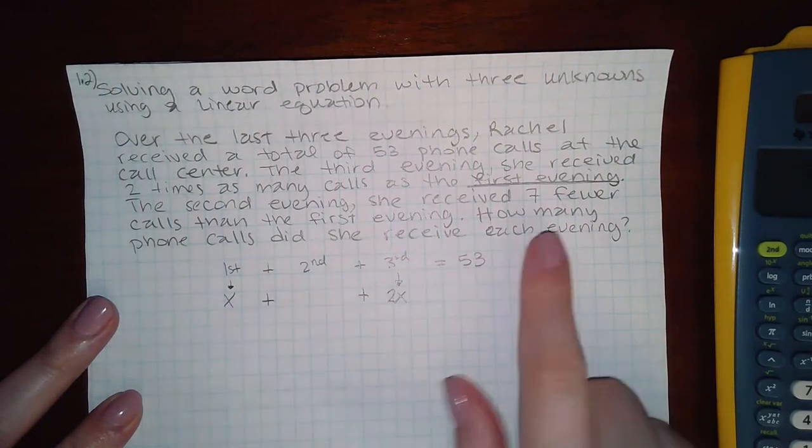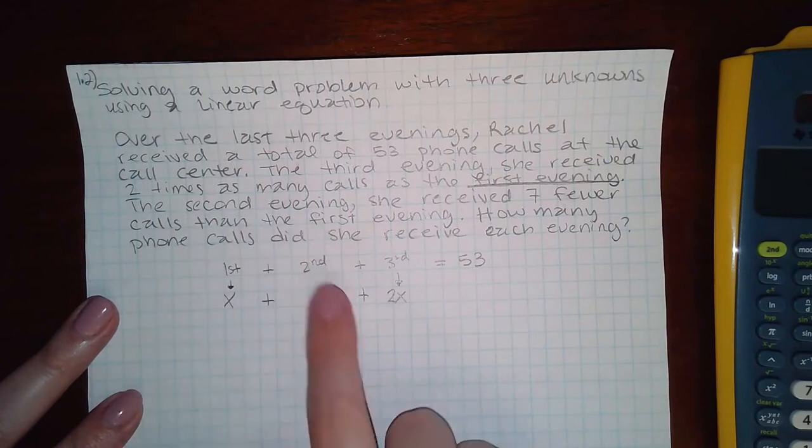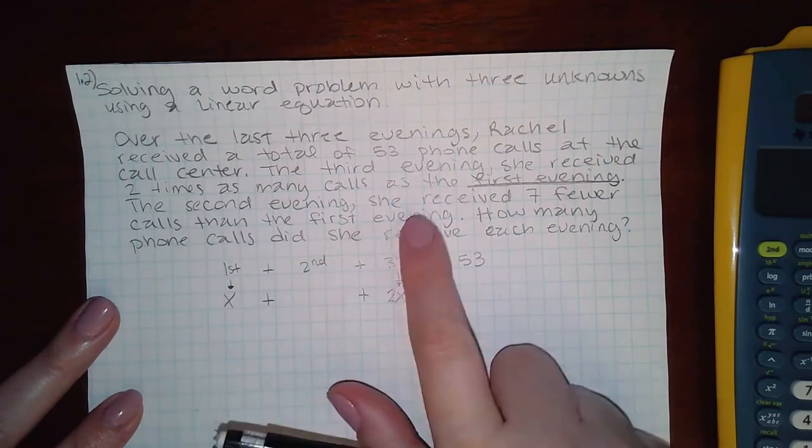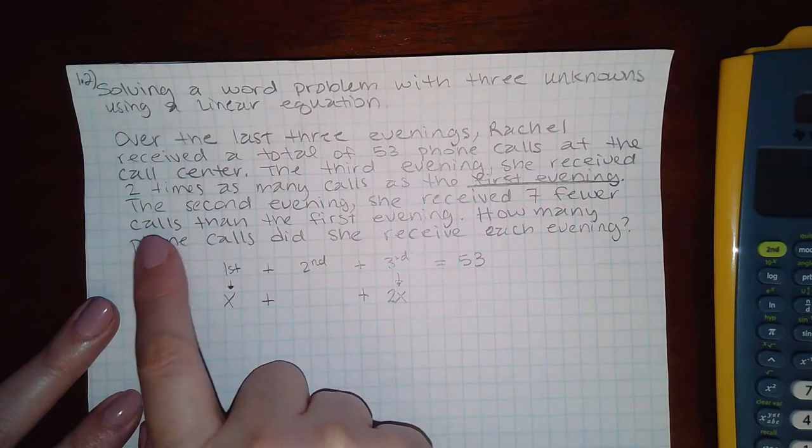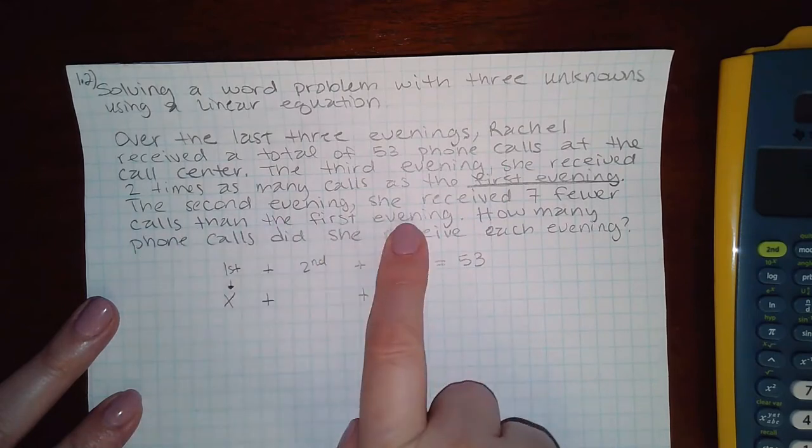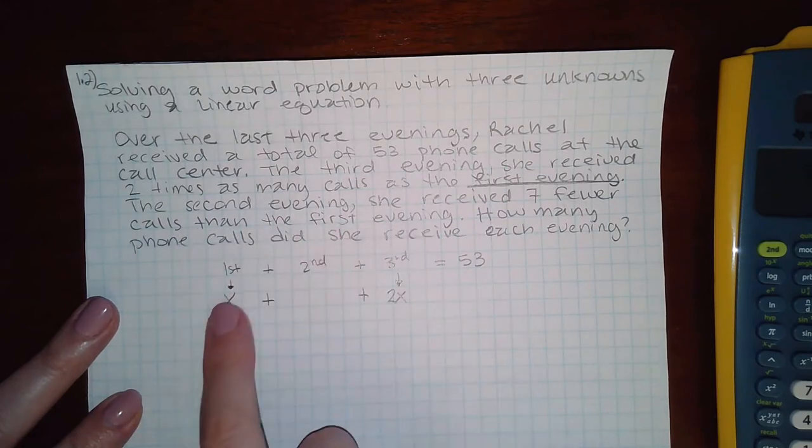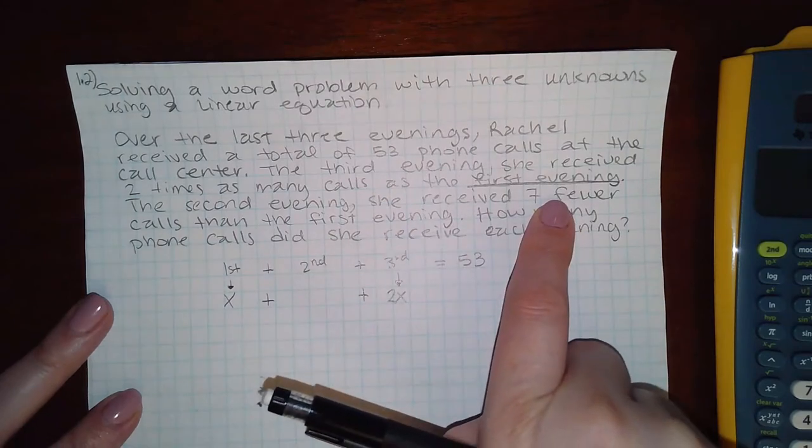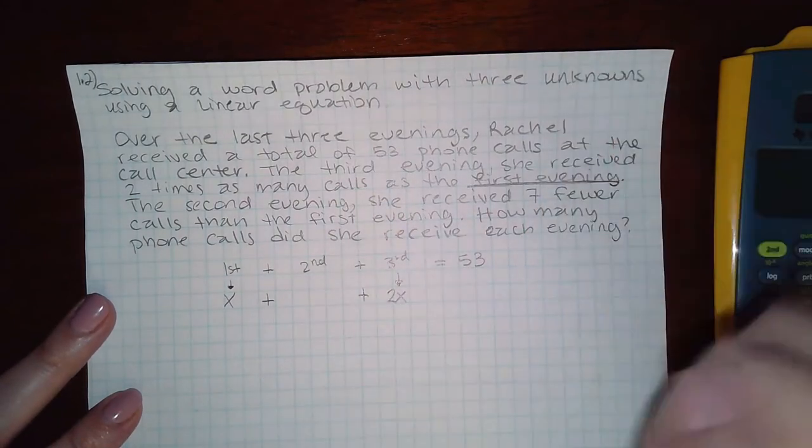Then the next sentence says the second evening, so now they're talking about this evening, she received seven fewer calls than the first evening. So again, they're comparing it to the first evening. Fewer means less or subtract.